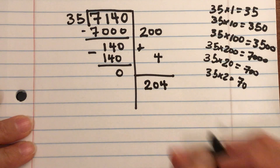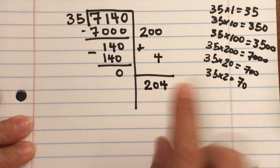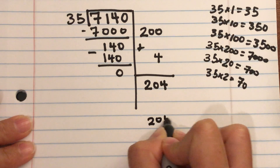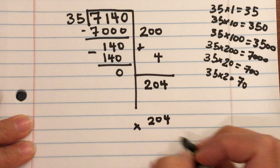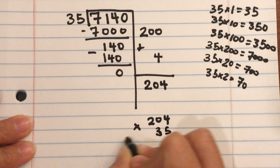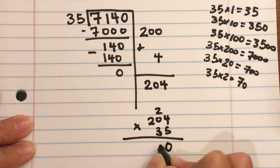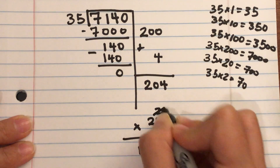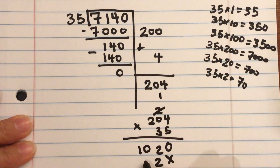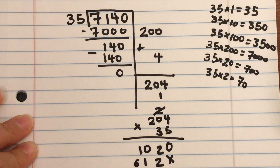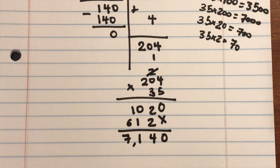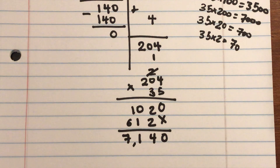Before writing down my final answer, I double-check by multiplying the quotient by the divisor — since division and multiplication are inverse operations. 204 × 35 = 7,140. That checks out, so the answer is confirmed.